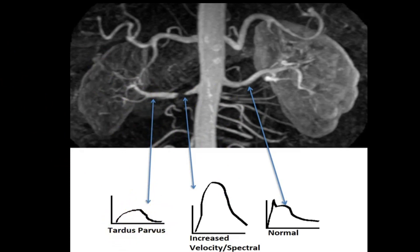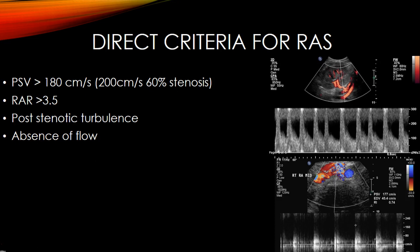Tardus parvus means there is increased acceleration time — instead of a sharp upstroke, you have a delayed upstroke. It is seen post-stenotically and is diagnostic of a stenosis proximal to wherever you're sampling. Direct criteria for renal artery stenosis include: peak systolic velocity greater than 180 centimeters per second; velocities of 200 cm/s or above are predictive of at least 60 percent stenosis; renal-aortic ratio greater than 3.5; and post-stenotic turbulence.